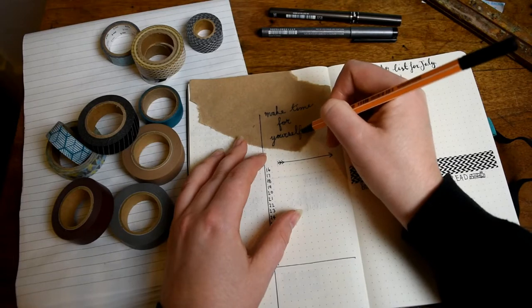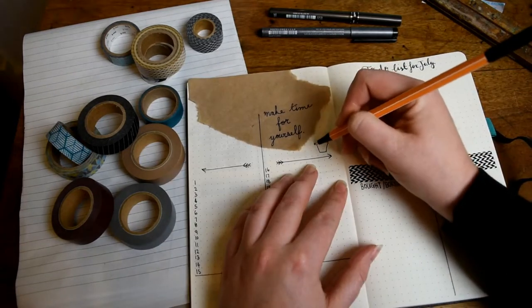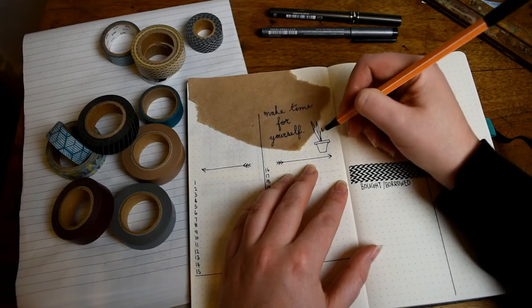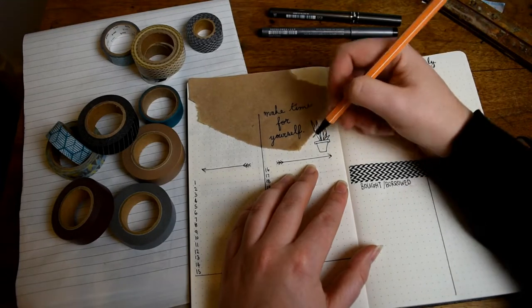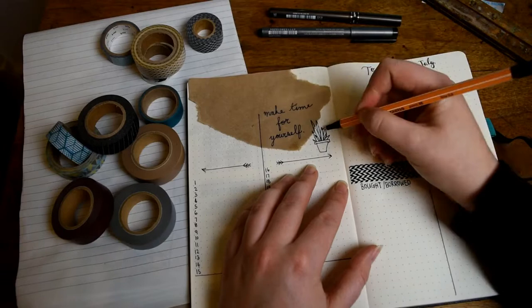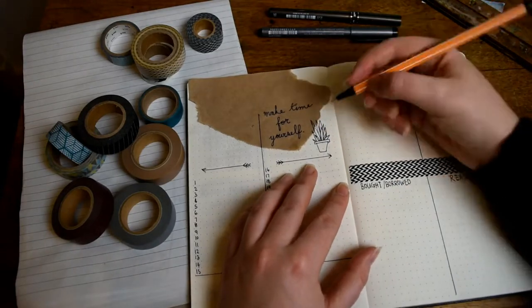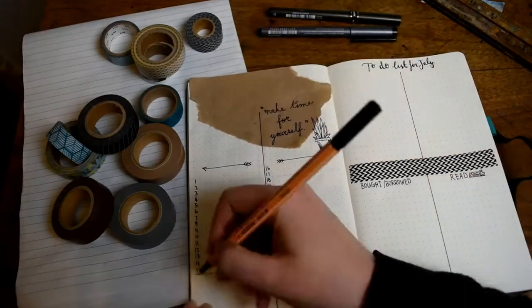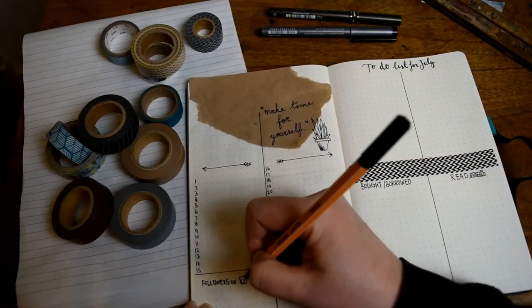Each month I try and create different little decorations on each page just to keep it interesting, but I don't spend too much time on them and I try and keep them really simple so that they're not distracting from all of the information that I'm trying to record, and also so when I get to the next month I don't feel pressure to create something really elaborate that takes up a lot of time.